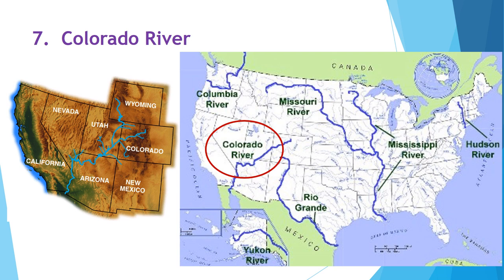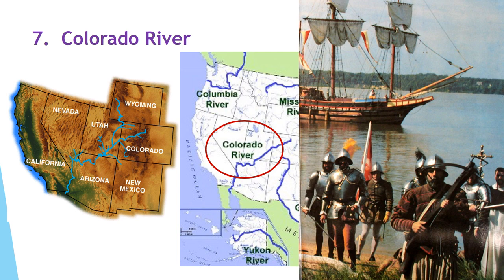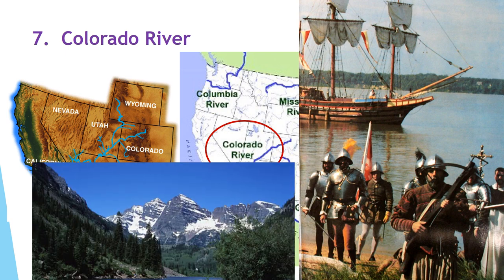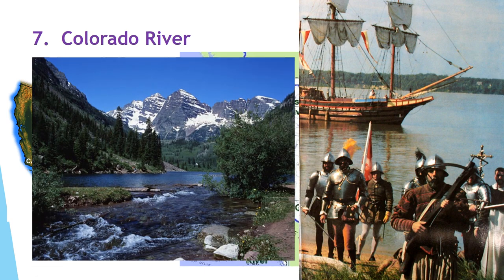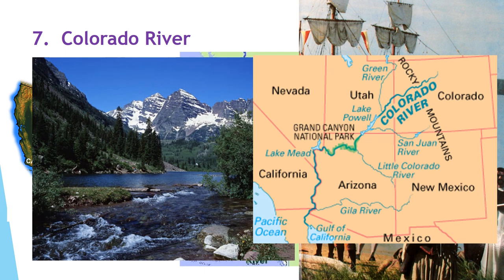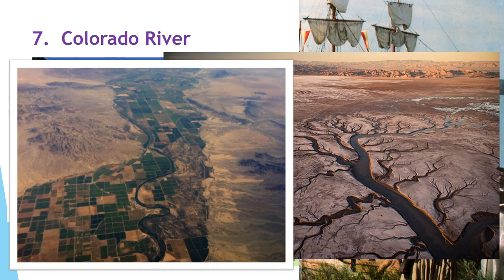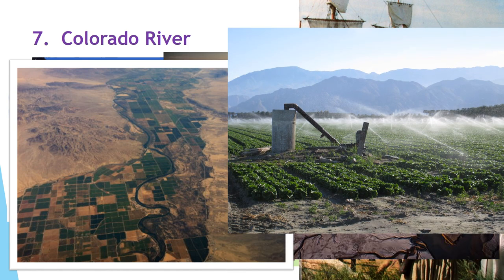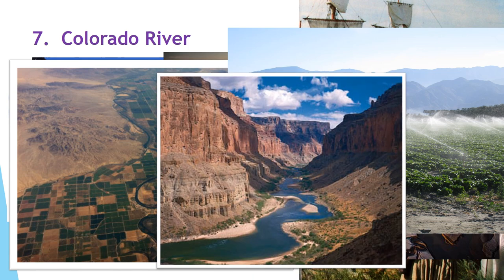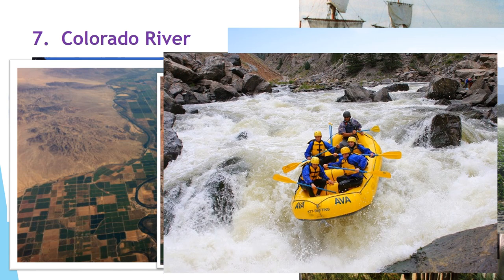The Spanish explorers used the Colorado River as a water route when they were exploring the southwest. This river starts in the state of Colorado and flows from the Rocky Mountains into the Pacific Ocean. Because it is so dry in this region, the Colorado River supplies those that live there with water for living as well as for farming. The Colorado River flows through the Grand Canyon and is known for its white water rapids. Draw the Grand Canyon and some rapids next to your note on the Colorado River.